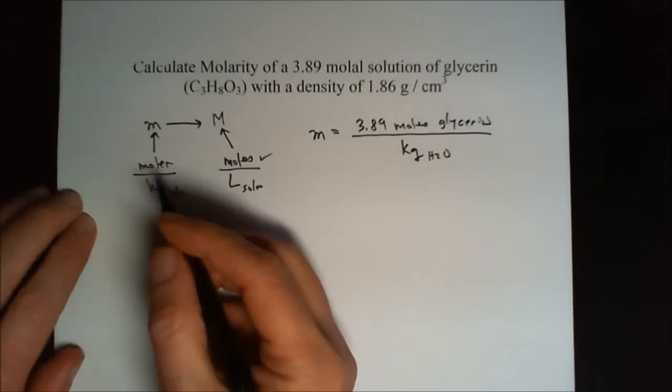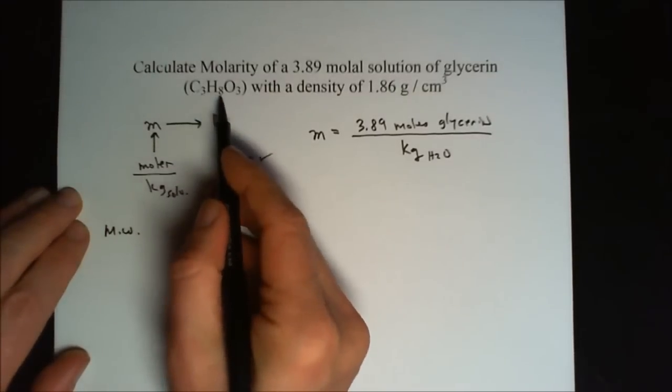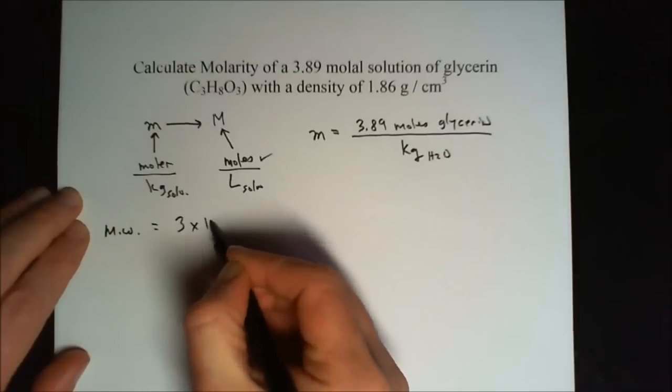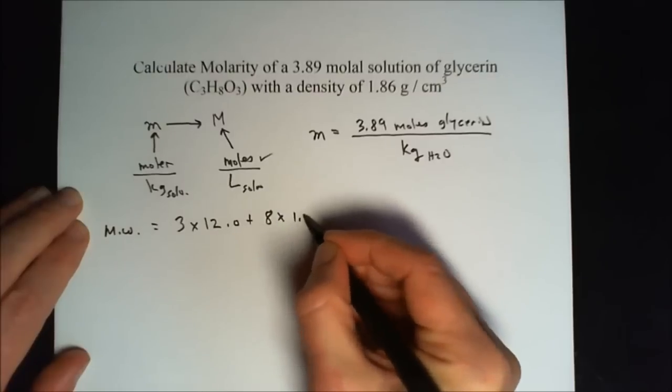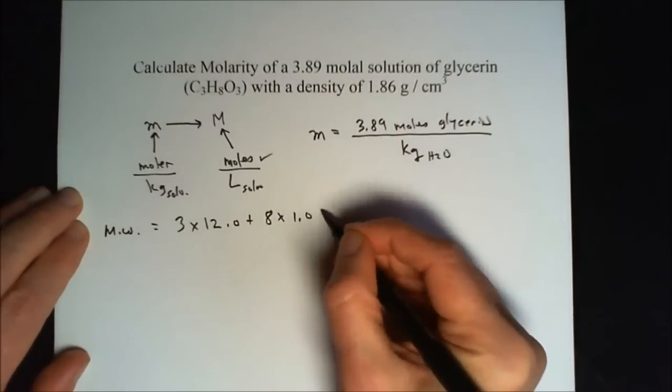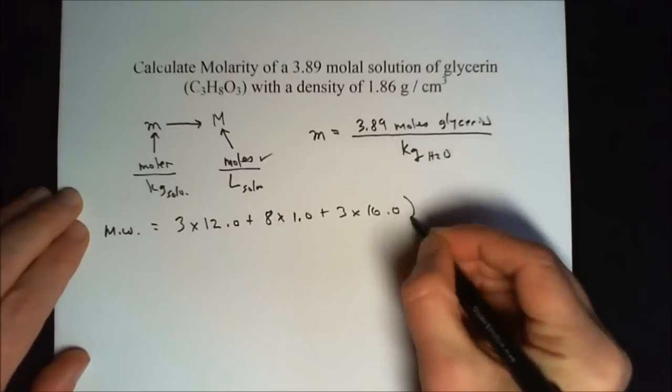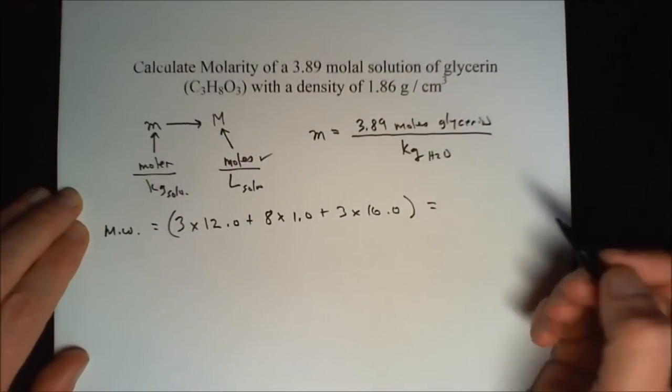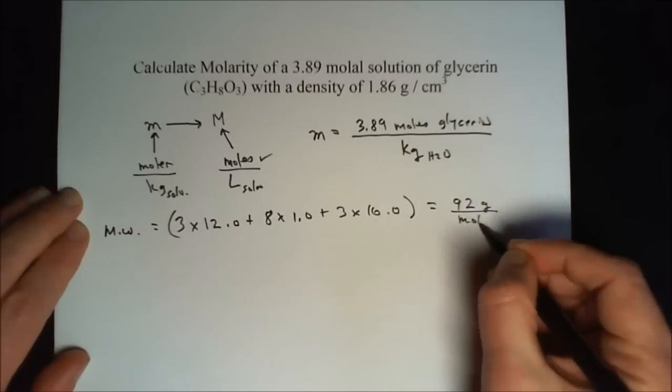First, let's get the molecular weight of glycerin. Glycerin is C3H8O3, so our molecular weight is 3 times 12 for carbon, plus 8 times 1 for hydrogen, plus 3 times 16 for oxygen. That gives us 92 grams per mole for glycerin.